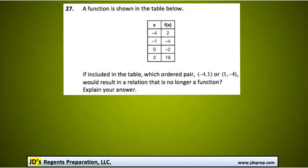This is problem number 27 from the January 2015 Algebra Regents exam. In this question we're given a table of values for a function, and it says, if included in the table, which ordered pair,